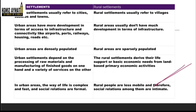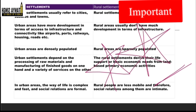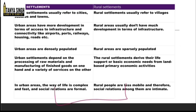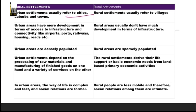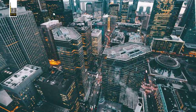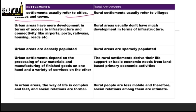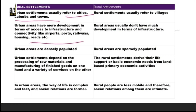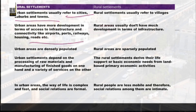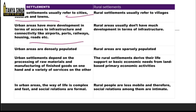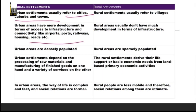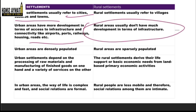Let us now look at the very important part: the difference between urban and rural settlements. Urban settlements include towns and cities. In urban areas, there is a lot of development in infrastructure — airports, ports, railways, roads, electricity, and water supply are all well developed. In rural areas, we do not find much infrastructure — roads and water supply are not well developed.